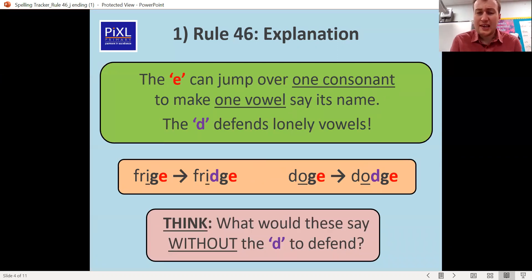So the E can jump over one consonant to make one vowel say its name, and then the D comes in to defend lonely vowels. So you need the G and the E, and then you need to put a D in if there's a vowel on its own. So if you've got A, E, I, O or U on its own.